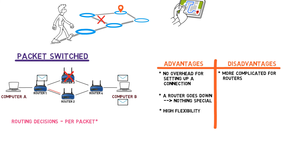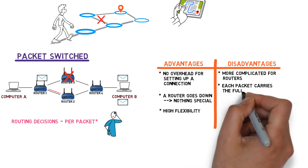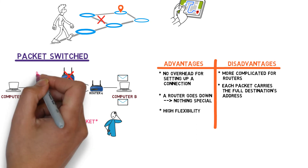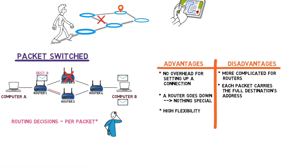Additionally, what information does a packet have to carry in a packet-switched network? In a physical circuit network, there was no need for any information as the route was based on the physical port. In a virtual circuit network, each packet included a short circuit ID. Now, when we don't have circuits and thus no circuit IDs, each packet has to carry the full destination address. If A sends a message to B, this message has to say 'my destination is B.' This means more overhead for each packet compared to the previous models.